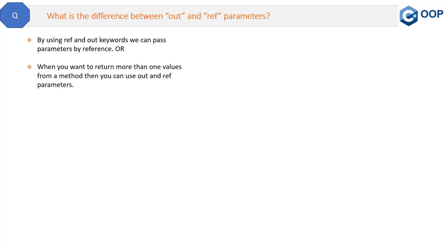By using ref and out keywords, we can pass parameters by reference. We can also say that when you want to return more than one value from a method, you can use out and ref parameters. So that's the definition and the use of out and ref parameters.